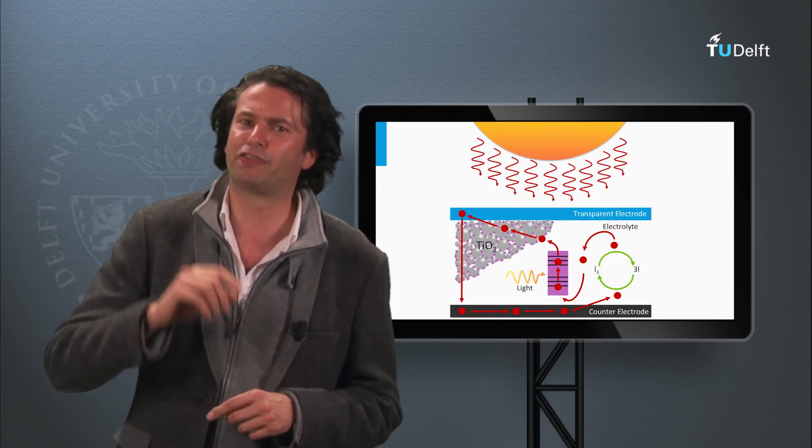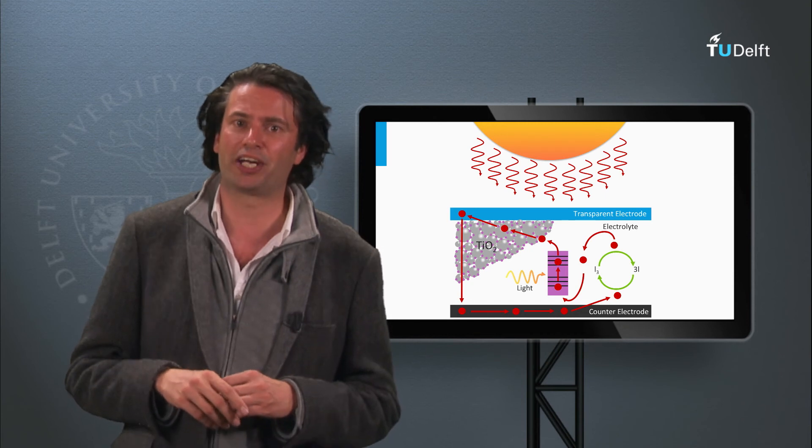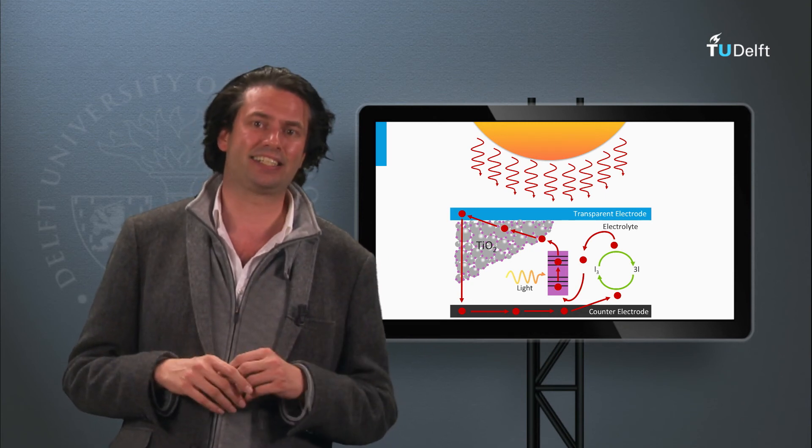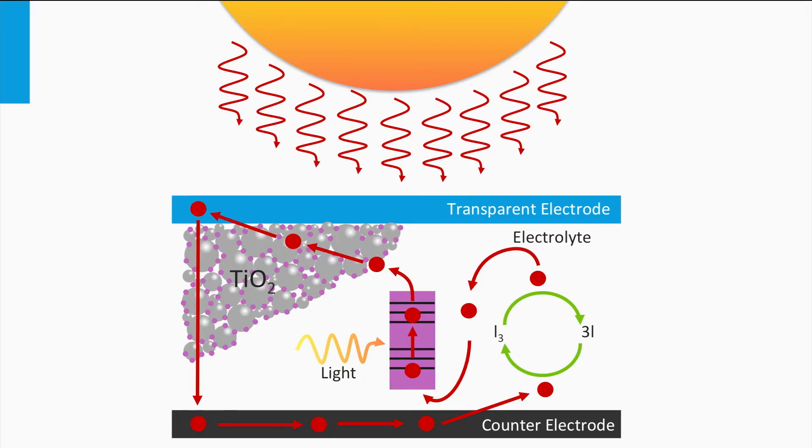An alternative solar cell concept based on organic materials is the so-called dye-sensitized solar cell. It is a photoelectrochemical system.